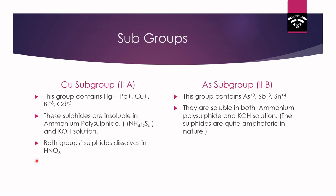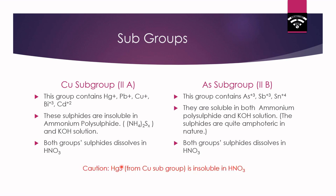Both subgroup sulfides can dissolve in HNO3. However, arsenic subgroup sulfides can also dissolve in KOH solution, making them amphoteric in nature — soluble in both acidic and basic media. An important caution: HgS has an extremely low Ksp of 10 to the power minus 54, so it is insoluble in HNO3 from the copper subgroup — we need aqua regia to dissolve HgS.